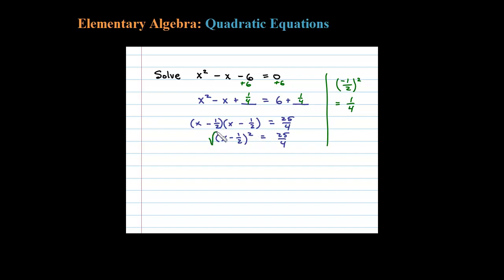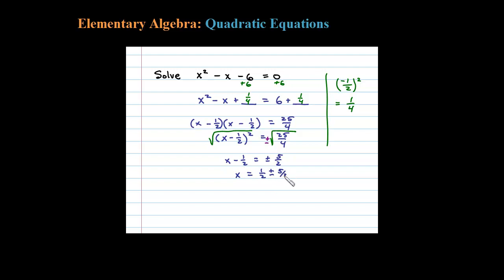Now we're ready to extract the root. Take the square root of both sides — don't forget plus or minus when you do that. This leaves us with x minus 1/2 equals plus or minus 5/2, since the square root of 25 is 5 and the square root of 4 is 2.